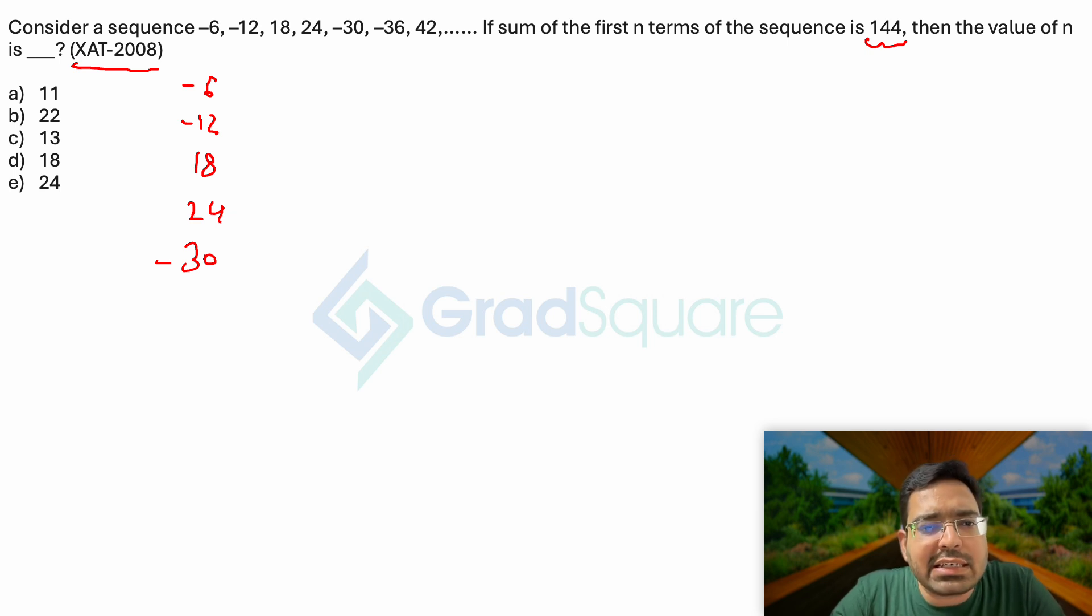So you have two negative and two positive. Does it follow the same trend? Yes, it gives me two negative values which is minus 30 and minus 36, then it starts becoming positive once again. So it becomes 42, then 48, followed by minus 54, minus 60, then plus 66. So this will be the series that it will follow.